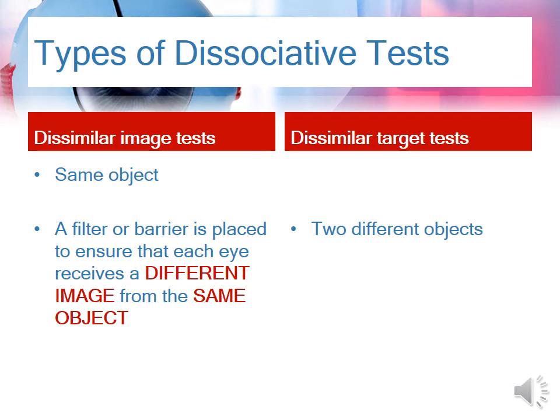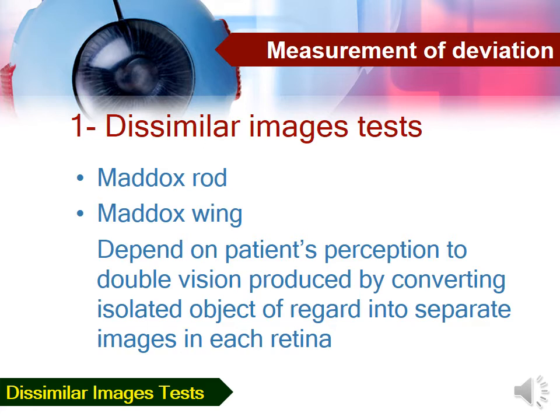There are two types of dissociative tests. In the dissimilar image tests, the same object or target is presented to both eyes, but a filter or barrier is used to ensure that each eye receives a different image from the same object. In the dissimilar target tests, two different objects are placed before each eye. The dissimilar image tests include the Maddox rod and the Maddox wing tests, both of which depend on the patient's perception of double vision introduced by converting the isolated object of regard into two separate images, one on each retina.